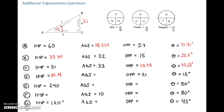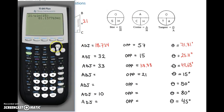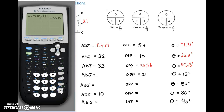Now we're looking for the adjacent. Given values, we've got the opposite, so let's use tan. We're looking for the adjacent and we have the opposite and the angle. So the adjacent is the opposite divided by tan of the angle — 21 divided by tan of 15 degrees. That gives us 78.373, so we'll go with 78.37.